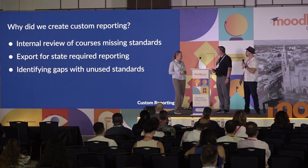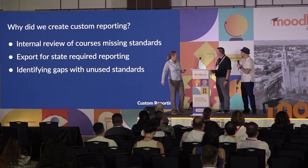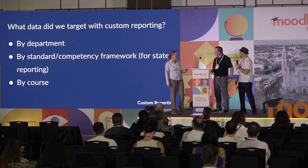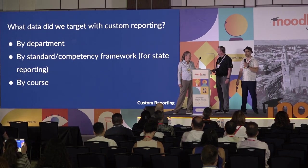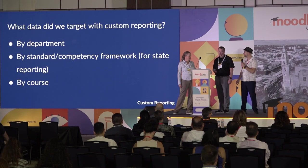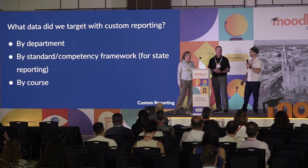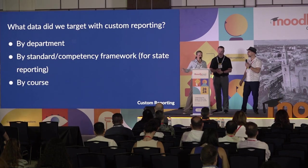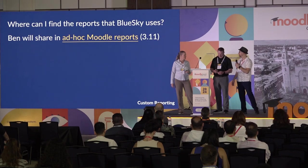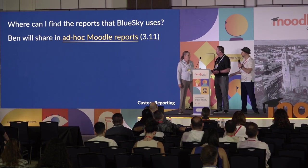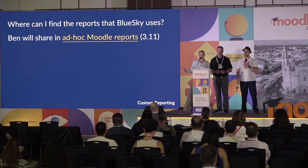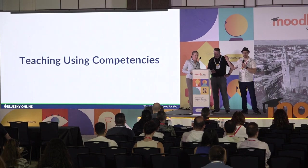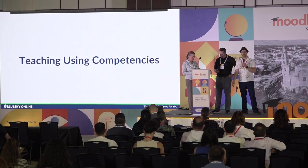Along the lines of custom reporting, we've already covered the main reasons. With the drill-down level of reporting, you can start at a department level, then move to a specific standard or strand, and get down to the course level where a teacher can see exactly which standards they are or aren't addressing. This is a link — we'll get this shared out — but you can find it in ad hoc reports on Moodle.org so that you could easily use similar reporting.